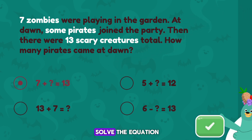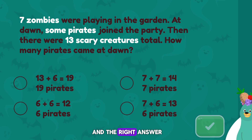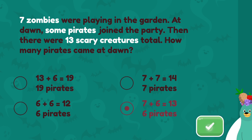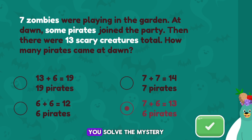Good thinking! Now let's solve the equation. Pick the option that has the correct equation and the right answer. Seven plus six equals thirteen. Six pirates joined at dawn. Arrrr! Seven plus six equals thirteen. Six more pirates came at dawn. You solved the mystery!